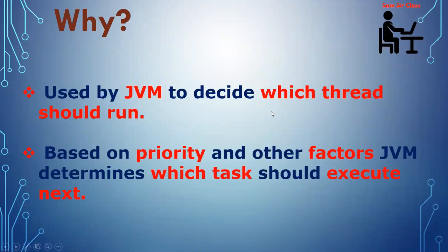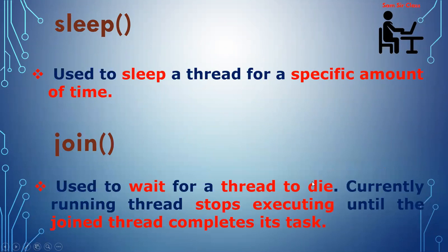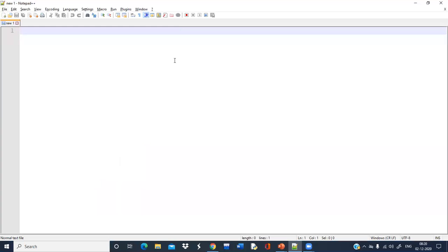So first of all, why is thread scheduling required? This is actually done by the JVM to decide which thread should run currently. There are a number of factors related to this mechanism, along with priority, that the JVM will use to determine which task should execute next. For that, a number of methods are used. The first method we'll see is the sleep method, which is required for thread scheduling.